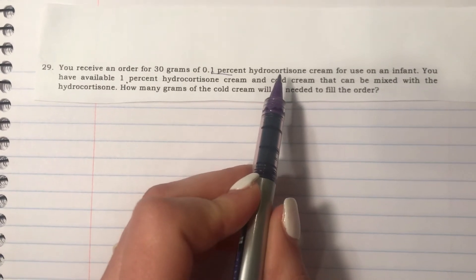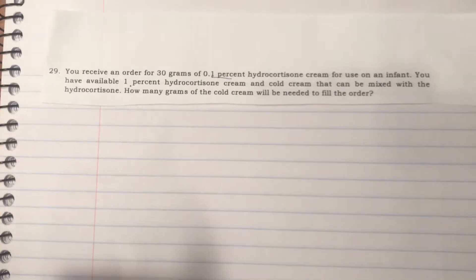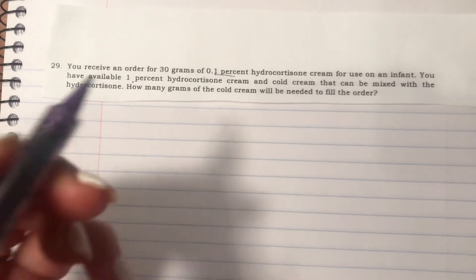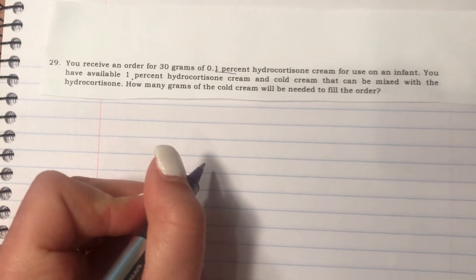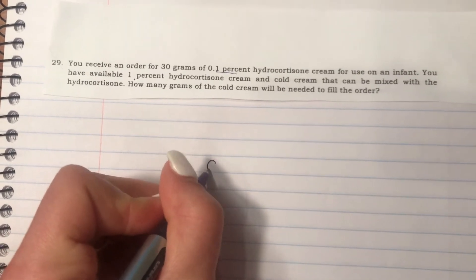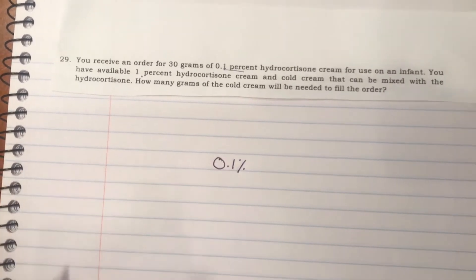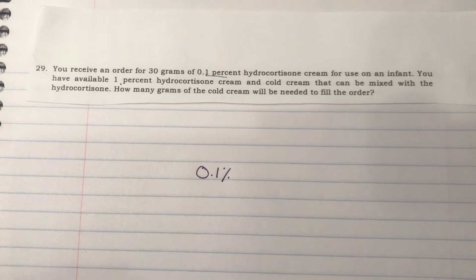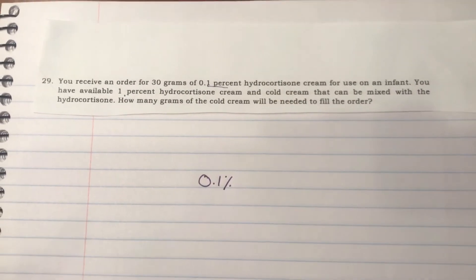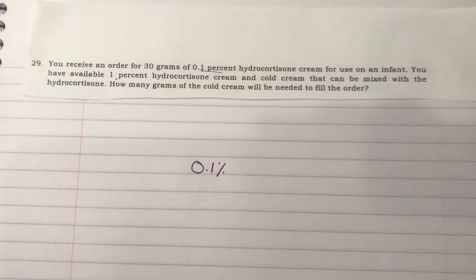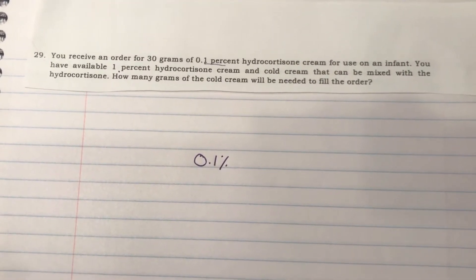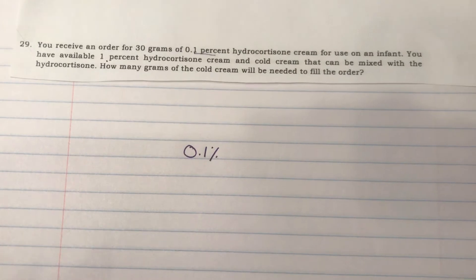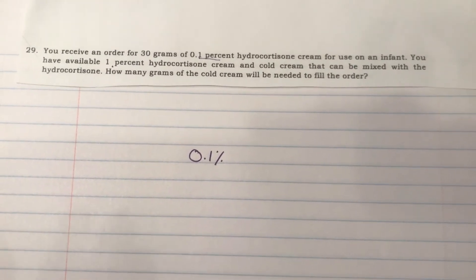What's the active ingredient here? It's the hydrocortisone, and you need to prepare 0.1% of that hydrocortisone cream. The very first step is to write the percentage of the cream you want to prepare, which is 0.1%. The idea behind allegation is that you always want to prepare a certain percentage of an active ingredient or compound from two other compounds you already have that have different percentages of that active ingredient.